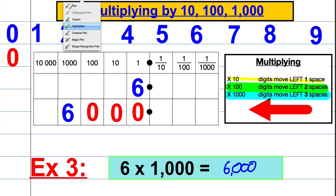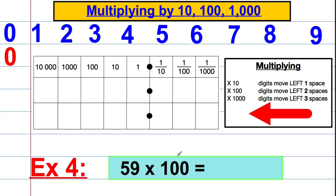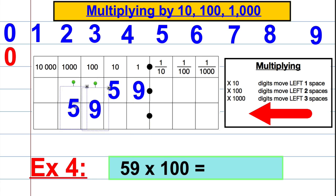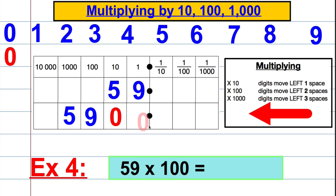Let's use that idea on slightly more difficult questions. 59 multiplied by 100. 50 is 5 tens and 9 is 9 ones — so that's 59 originally. We're multiplying by 100, which means moving the digits two spaces to the left: 1, 2. We put in our place value zeros, and the answer is 5,900.